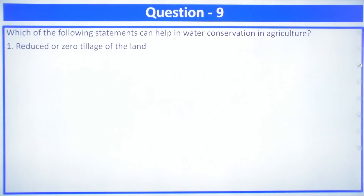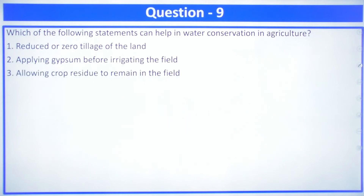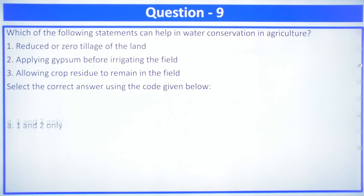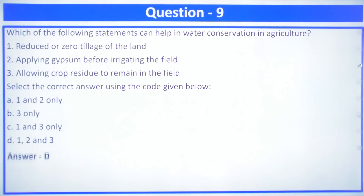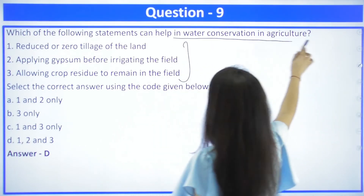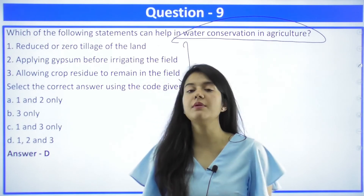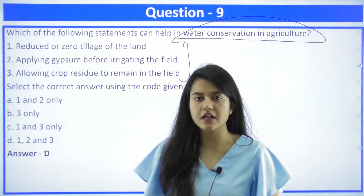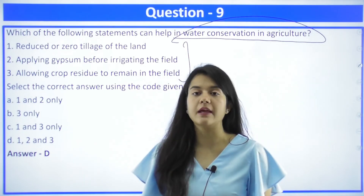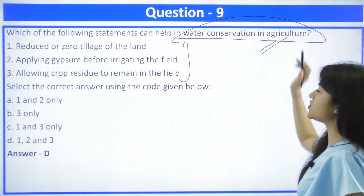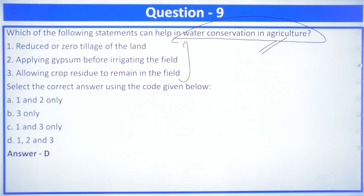Question number 9: which of the following statements can help in water conservation in agriculture? A — reduced or zero tillage of the land; B — applying gypsum before irrigating the field; C — allowing crop residue to remain in the field. The answer is D — one, two and three — because all three methods can help in water conservation in agriculture.